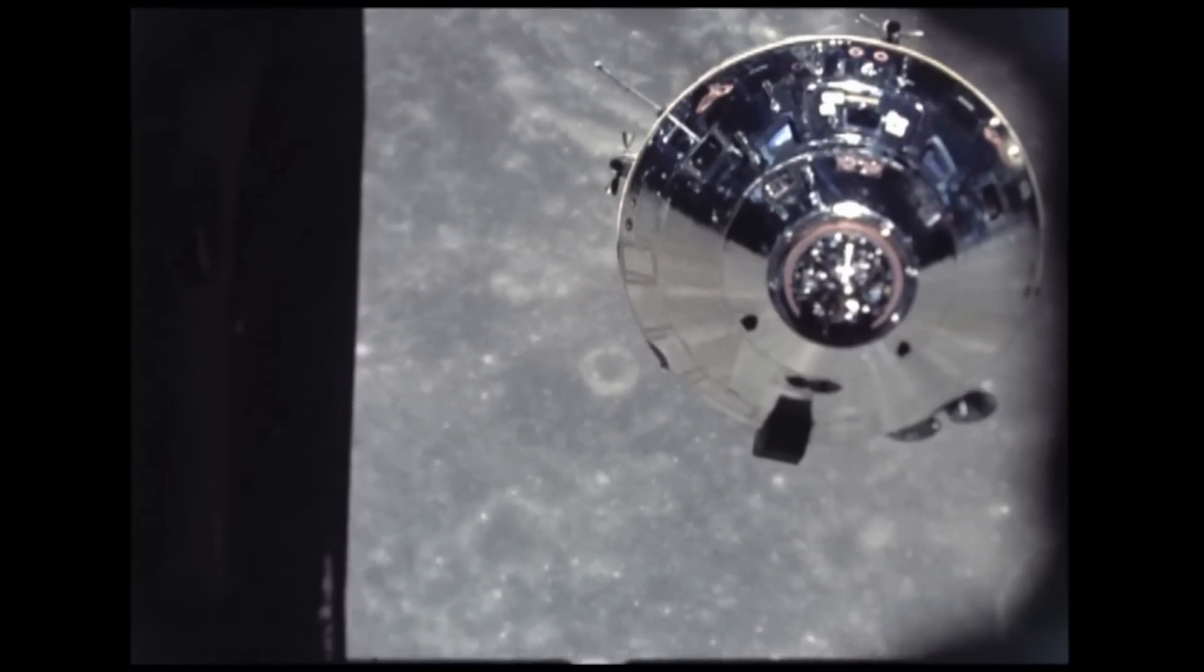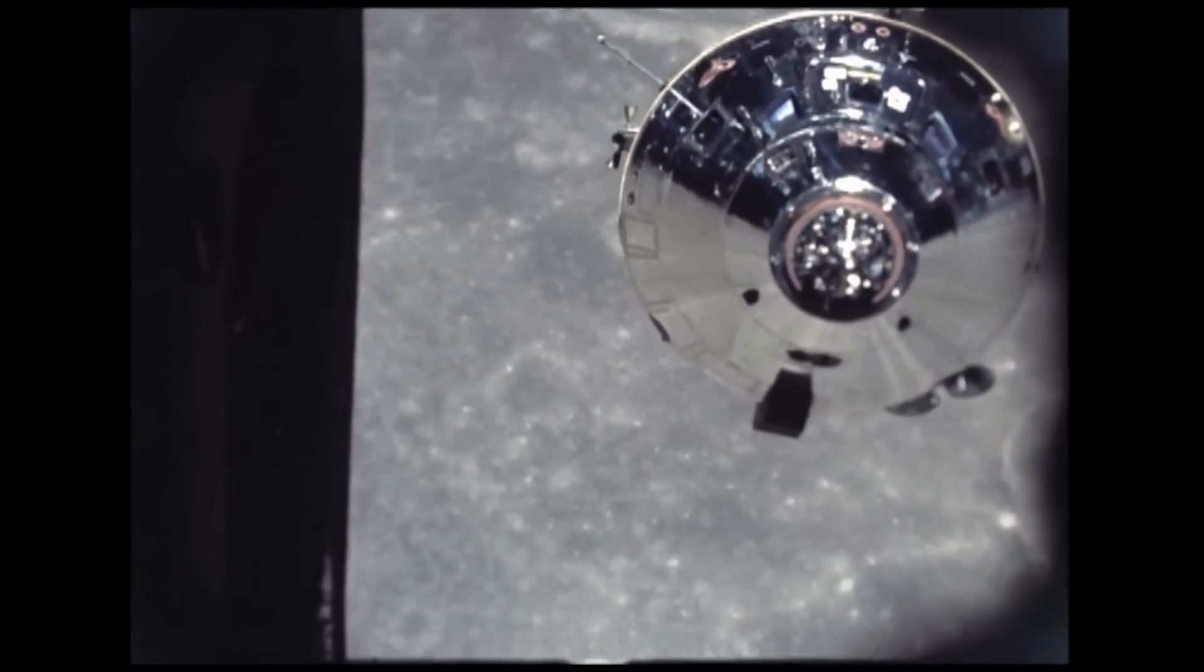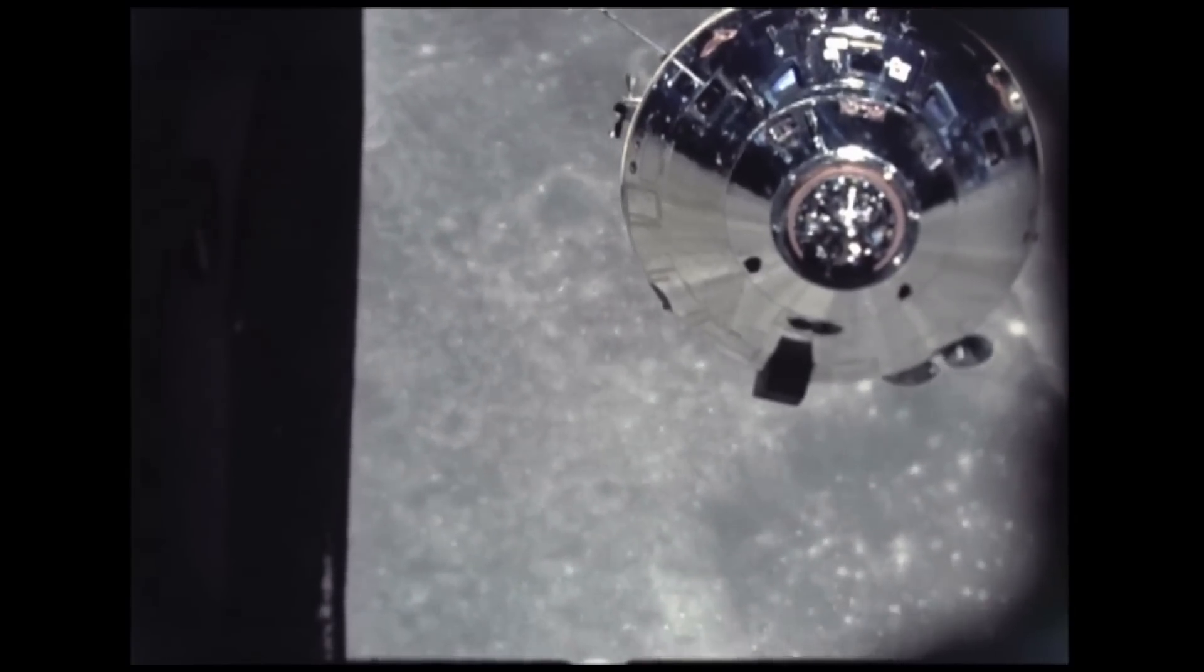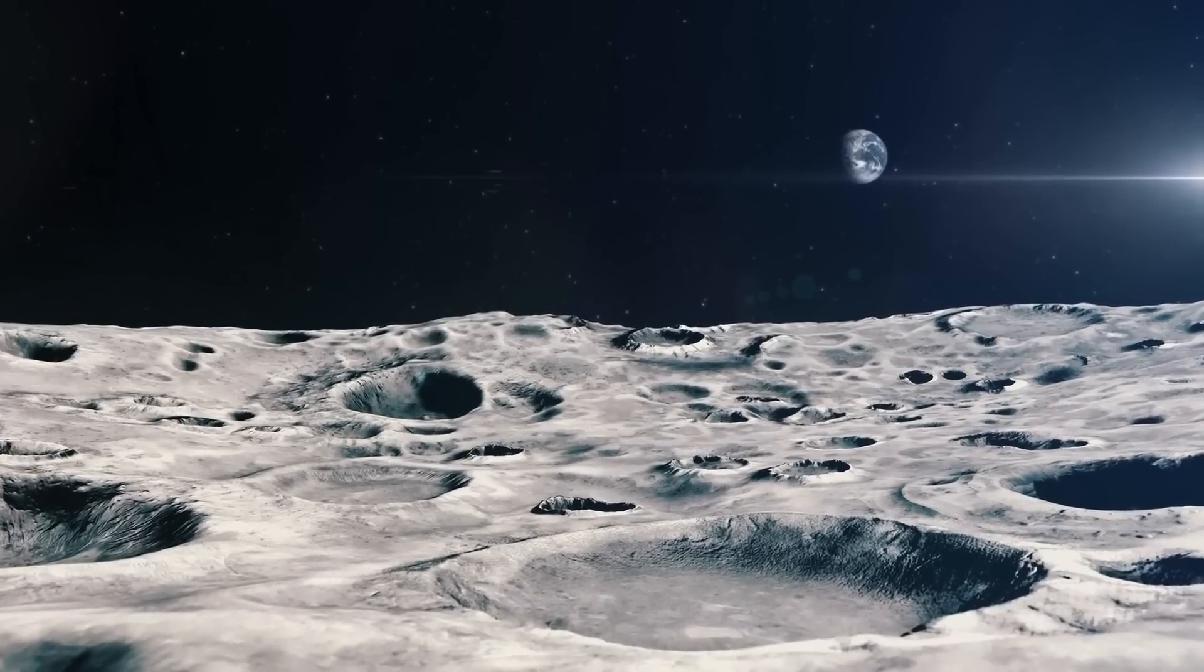It was predicted by astronomers that a misplaced rocket booster would collide with the Moon, marking the first documented instance of space debris accidentally striking our natural satellite.